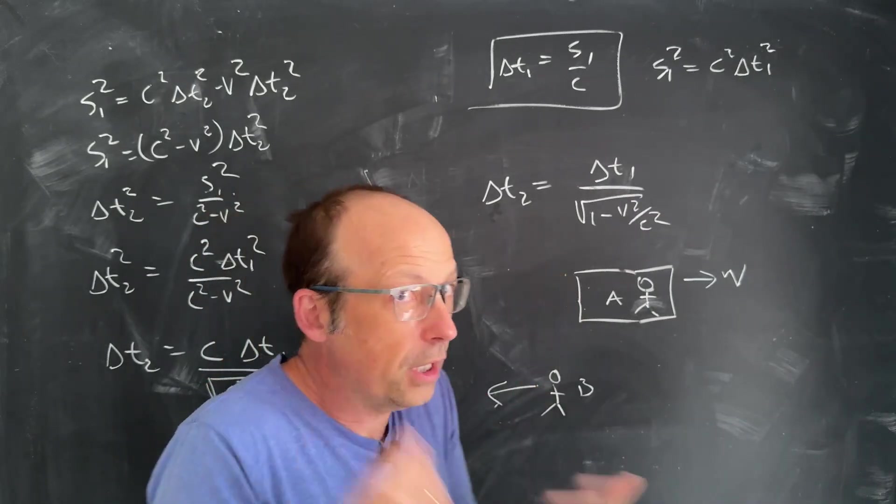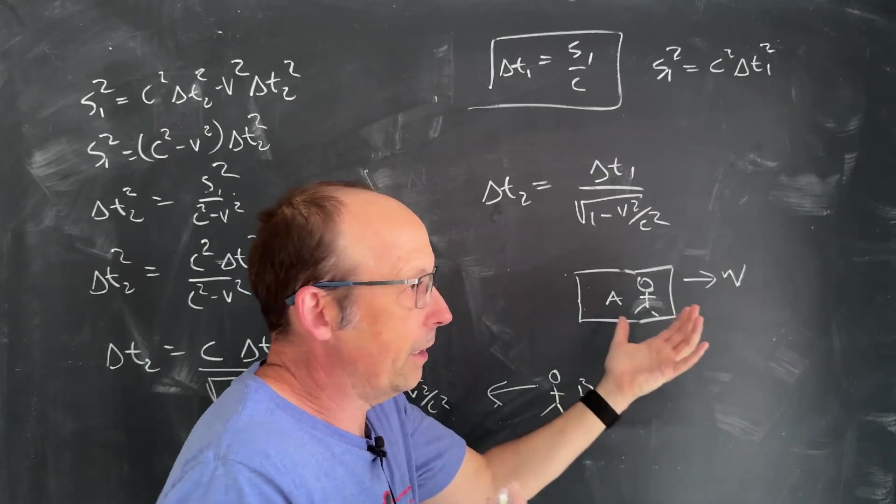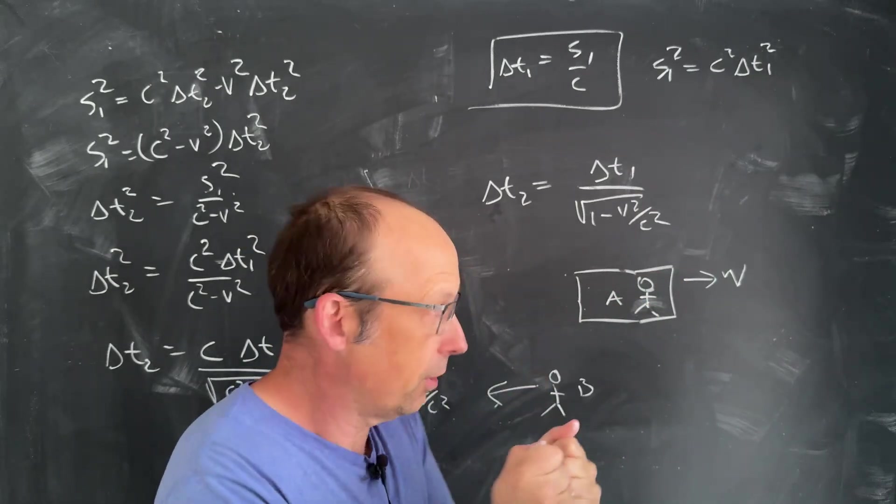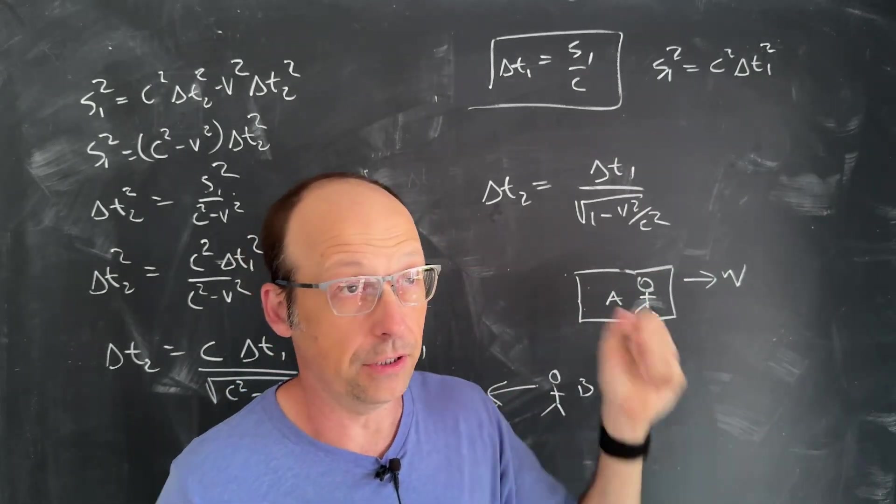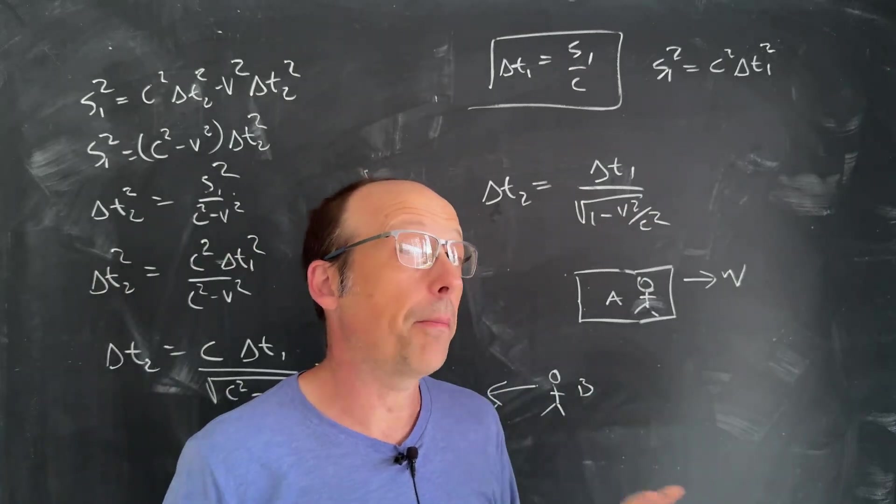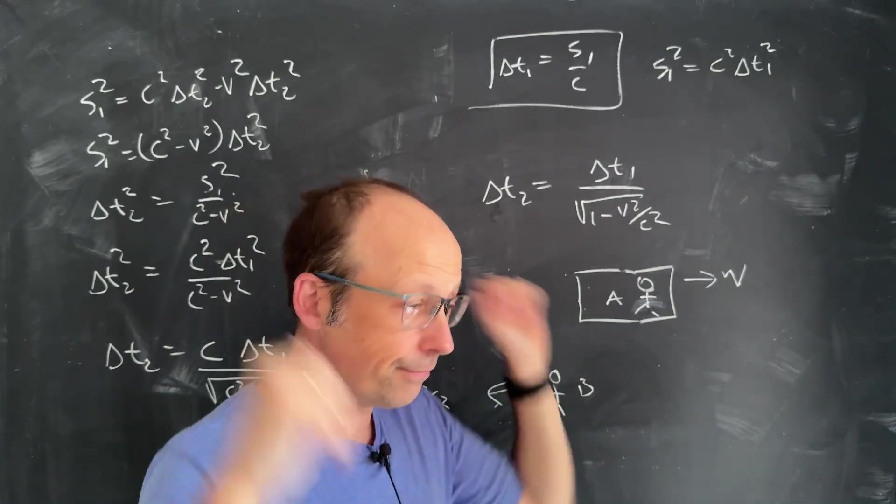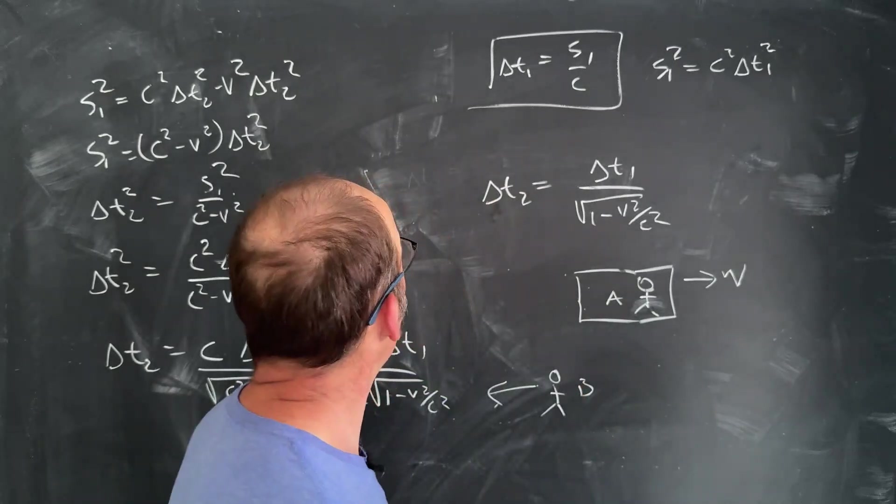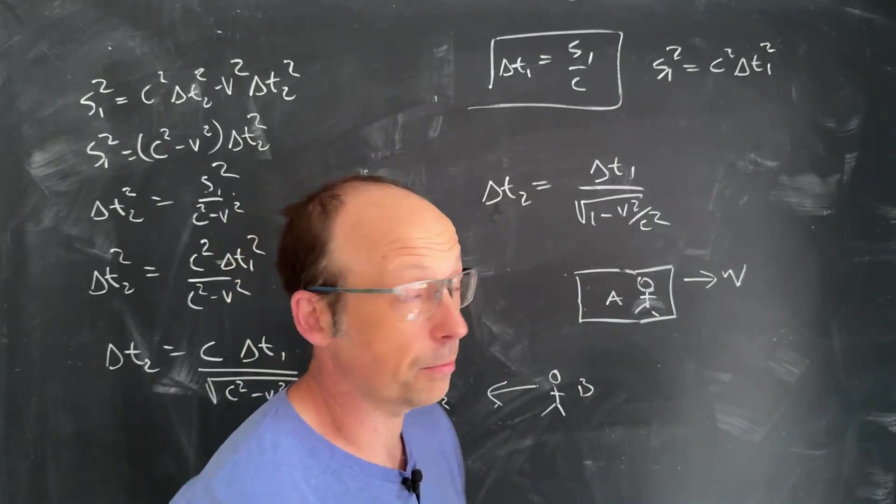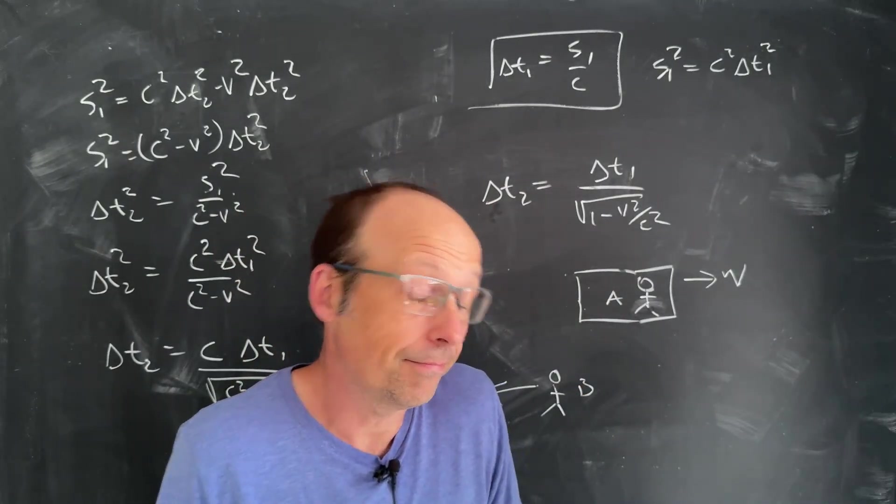You can only compare if someone had to come back and have the clocks next to each other. But in that case, you'd have to have an acceleration. Acceleration is not part of special relativity. Special relativity is just moving at a constant velocity. There you go. Hope that helps. A little bit of algebra. It's not that hard to derive. The end.